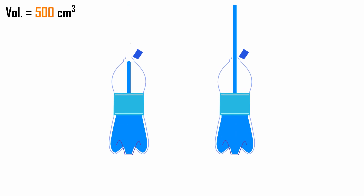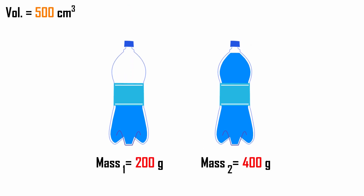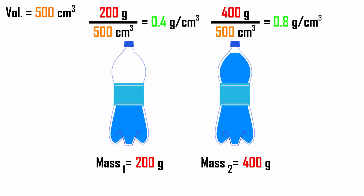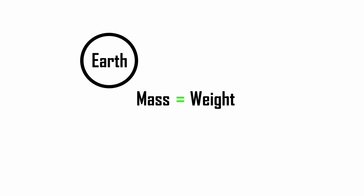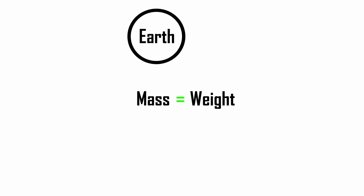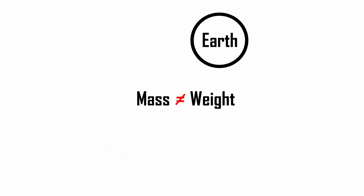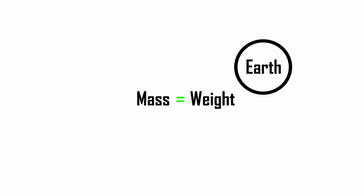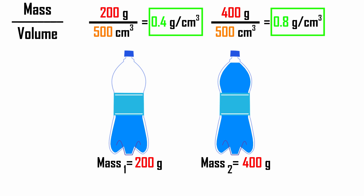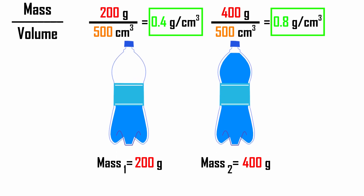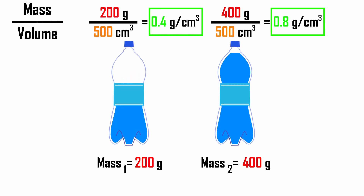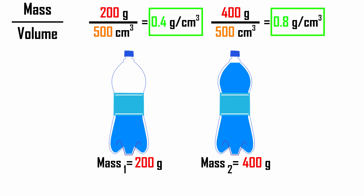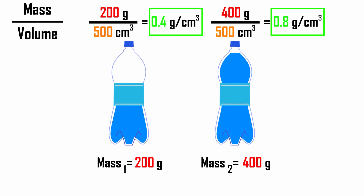Take these two bottles for example. Let's say they both have the exact same volume, but one of them is only half full. We can calculate the density of each bottle by dividing its mass by its volume. Note that mass is equal to weight on planet Earth — they can be used interchangeably here. The bottle on the left has a lower density because it's only half full, so it weighs less, and since both bottles have the same volume, the ratio of weight to volume is lower for the bottle on the left.